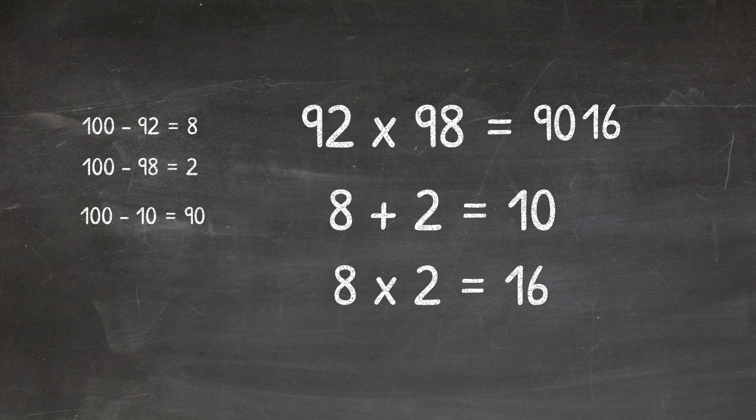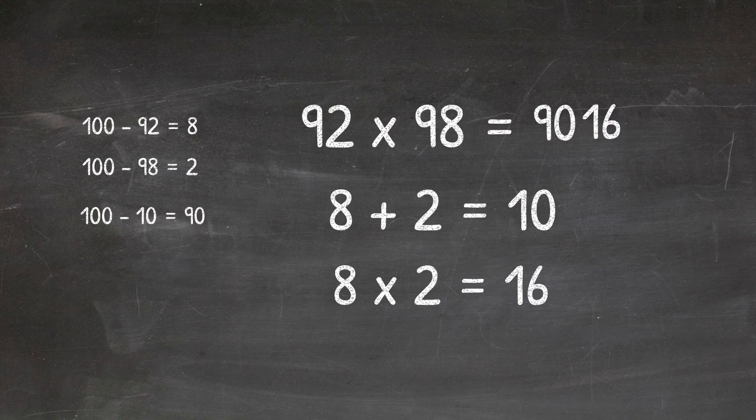So by just remembering a few simple steps, we can do this complex multiplication really easily. So for those at the back who weren't listening, let's go over that again. Now this works with any number, but the nearer they are to 100, the easier it will be to do.